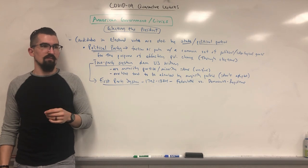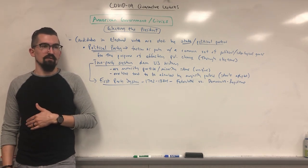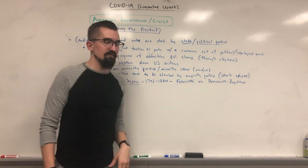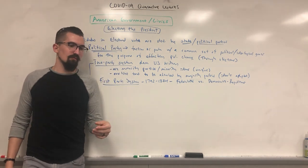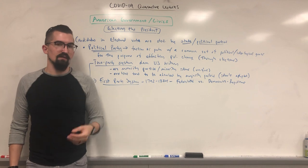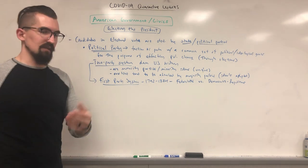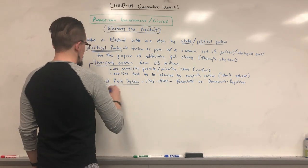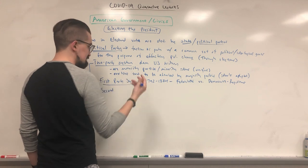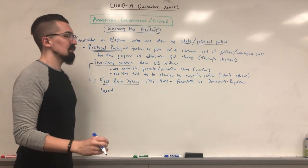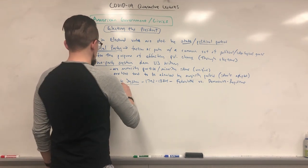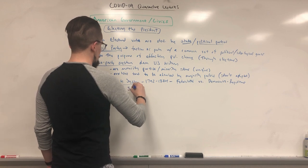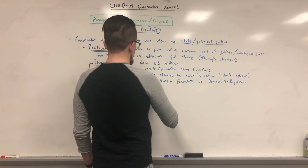The Democratic-Republicans were much more about smaller-scale government, rural individual farmers, and were against a national bank like the First and Second National Bank — what would nowadays be the Federal Reserve. The Federalist Party eventually collapsed because they were considered too elitist, not open to regular people, and their disasters with the Alien and Sedition Acts — a blatant violation of constitutional rights — brought them down.